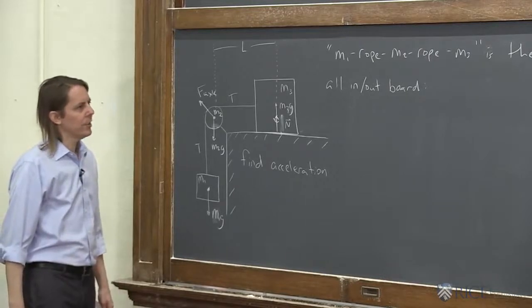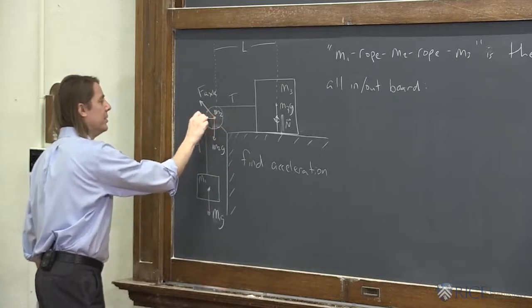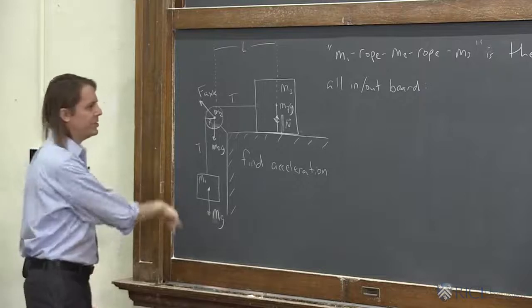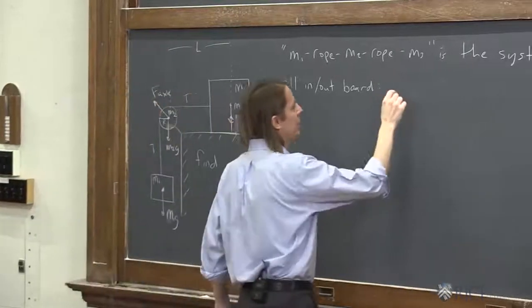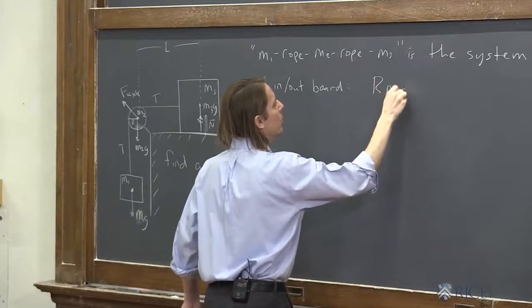So our torque that we had was big R, where big R, by the way, is the radius of the disk. I don't see that on here. Big R, M1g. That was the only torque left when we were all done. Big R, M1g.